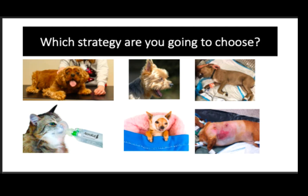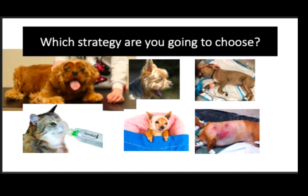Before talking about each strategy in depth, here are a few case scenarios. A nine-year-old spayed female Spaniel with severe degenerative mitral valve disease presenting in severe dyspnea with crackles — we will use the lung injury strategy because this dog is likely having congestive heart failure resulting in parenchymal lung disease.